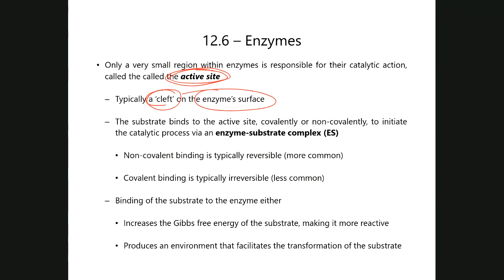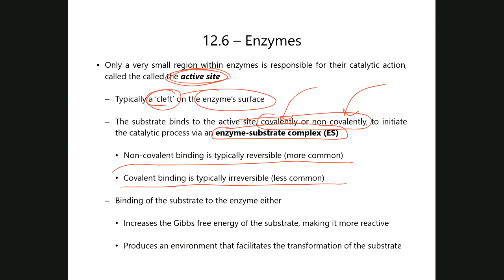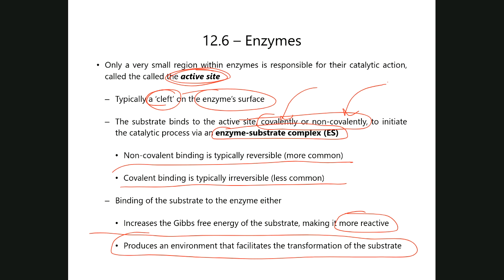Once the substrate binds to the enzyme in the active site — either covalently (less common) or non-covalently (more common) — this produces the enzyme-substrate complex. This increases the Gibbs free energy of the substrate, destabilizing it and making it more reactive. The moment something becomes more reactive, it facilitates transformation into something else. The active site provides an environment that facilitates the conversion of the substrate into the corresponding products.